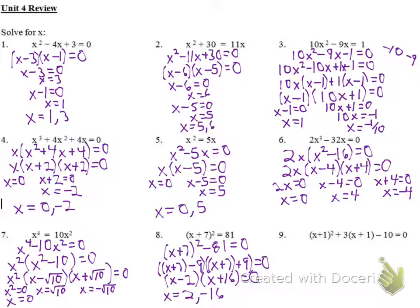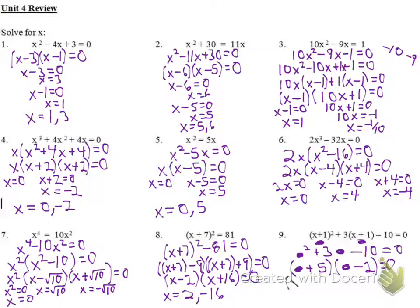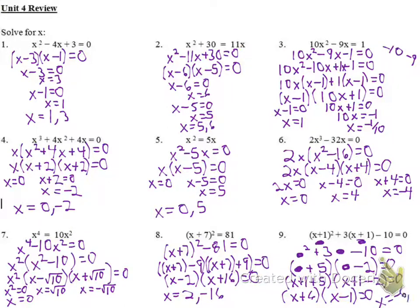Number nine, we follow the same idea — treat x plus 1 like a blob. So that's blob squared plus 3 blob minus 10 equals 0. Factoring gives blob plus 5, blob minus 2. Plugging x plus 1 back in: x plus 1 plus 5, and x plus 1 minus 2. We get x plus 6 and x minus 1. My two solutions are negative 6 and positive 1.